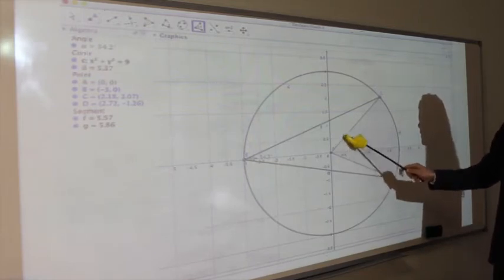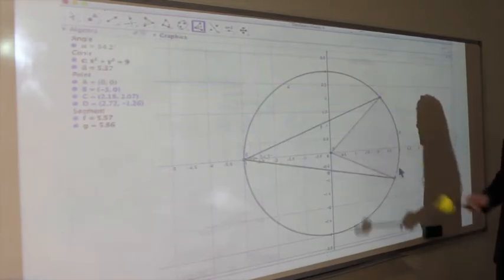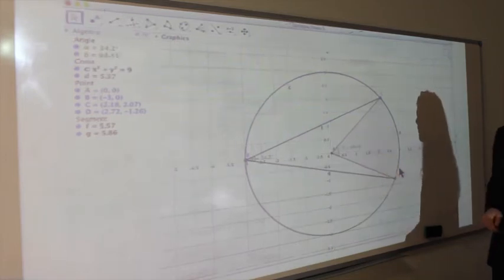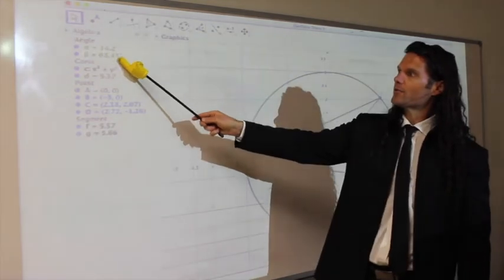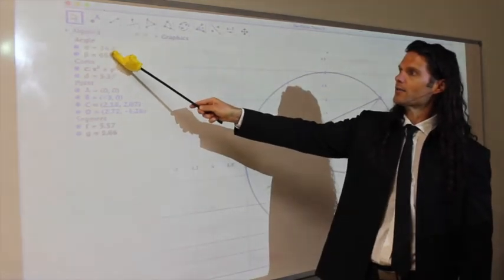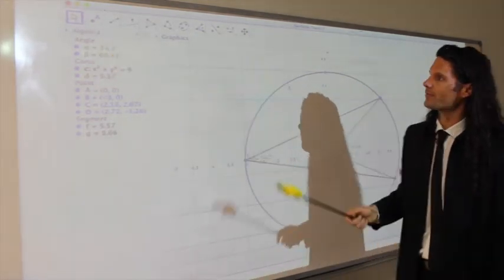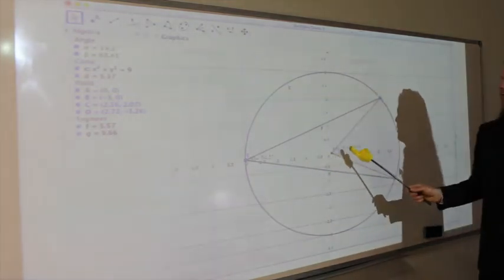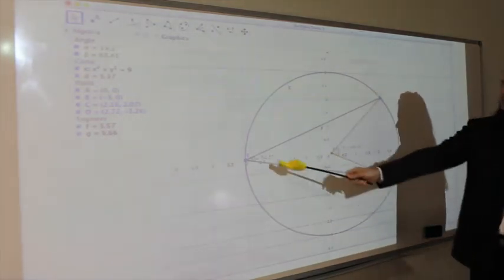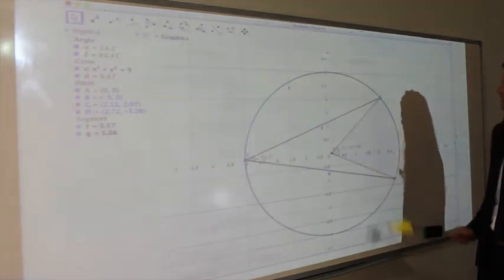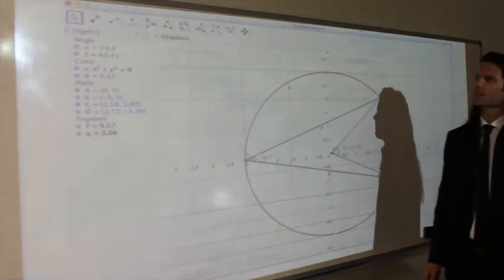Again, very intuitive that this angle measure is the same as the arc length in terms of degrees. So that angle measure beta is 68.4, rounding caused the 0.01 difference here. But indeed this angle measure is twice the opposite arc. Alright, on to the next one.